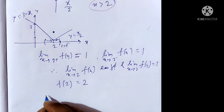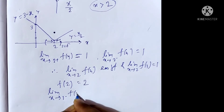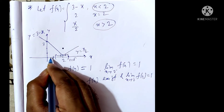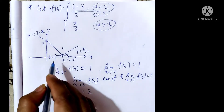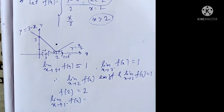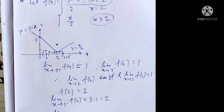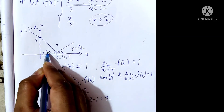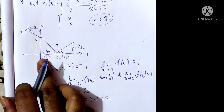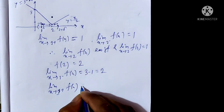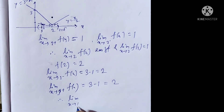Now find the limit as x tends to 1⁻ of f(x). At x approaching 1 from the left, the function is 3 minus x, giving 3 minus 1 equals 2. For the limit as x tends to 1⁺ of f(x), approaching from the right, the function is also 3 minus x (since 1 is still less than 2), giving 3 minus 1 equals 2. Therefore, the limit as x tends to 1 of f(x) exists and equals 2.